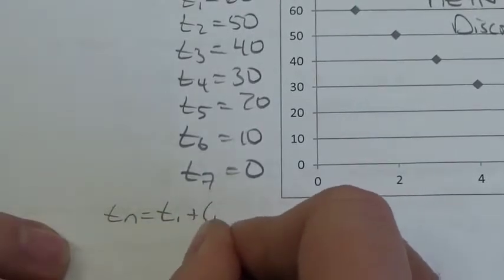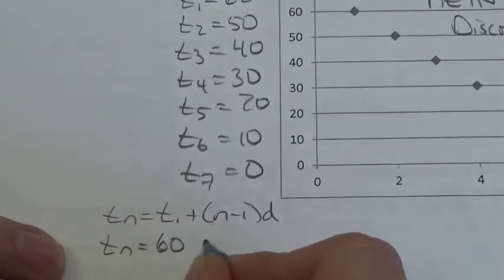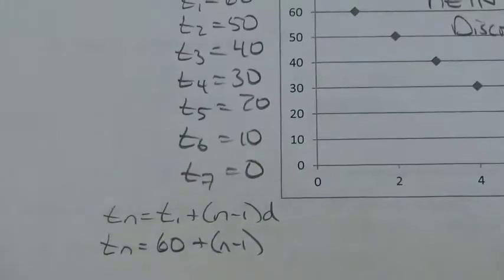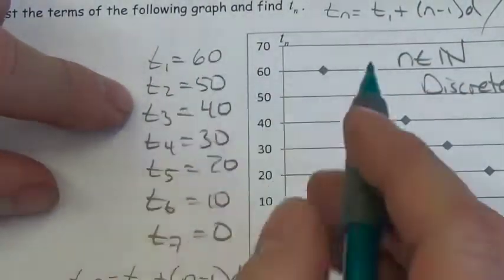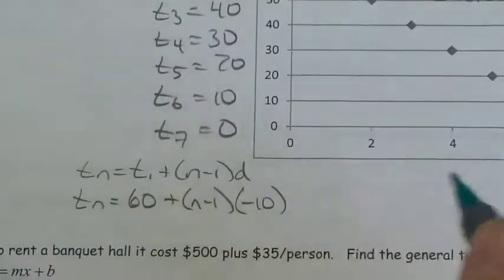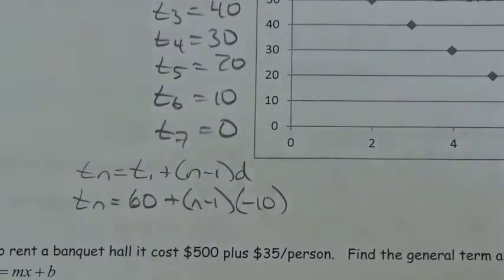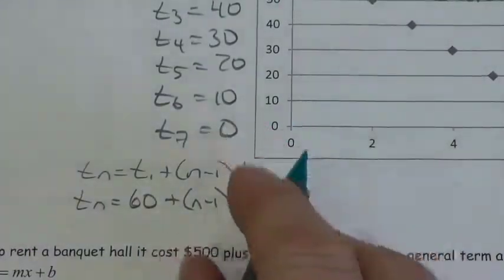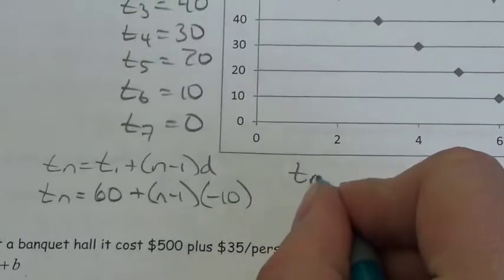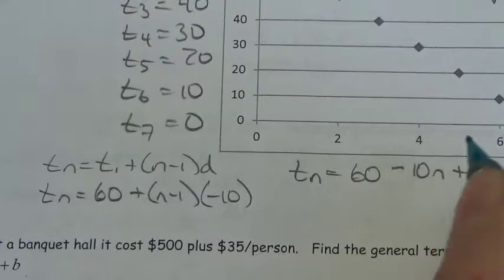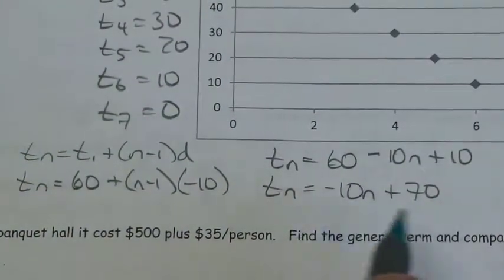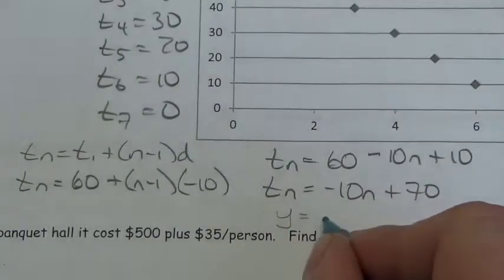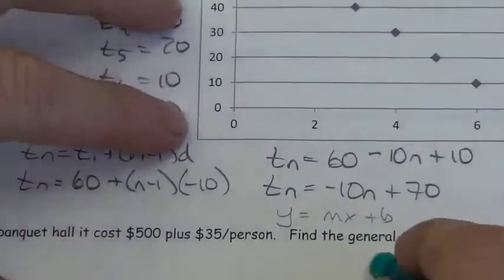So Tₙ equals 60 plus (n minus 1) times (-10). Expanding: 60 minus 10n plus 10, which gives the general term Tₙ equals -10n plus 70. Notice this looks very similar to y equals mx plus b — the equation of a line — where the common difference plays the role of slope. With a sequence though, N must be a natural number, so we have discrete points rather than a continuous line.